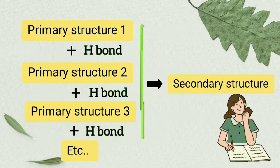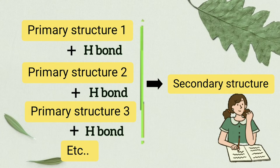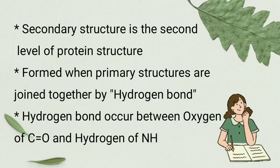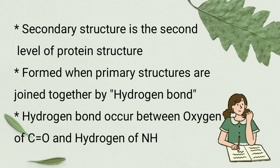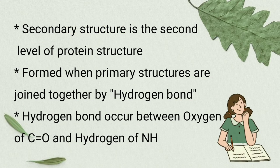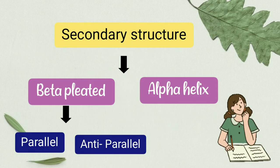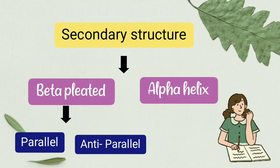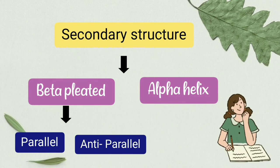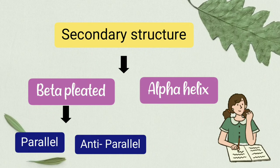Secondary structure is the second level of protein structure. It is formed by the combination of many primary structures together by hydrogen bonds. Hydrogen bonds are produced between the oxygen of the C=O group and the nitrogen of the NH group. Secondary structure has two conformations: alpha helix and beta pleated structure.